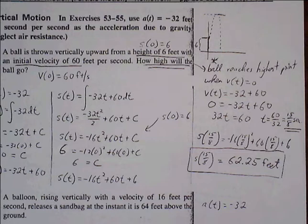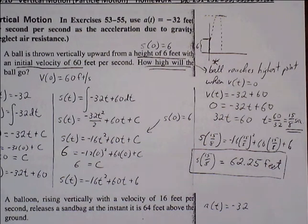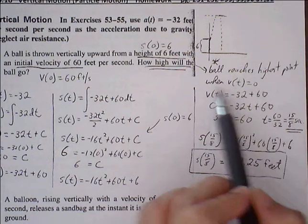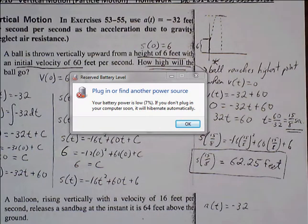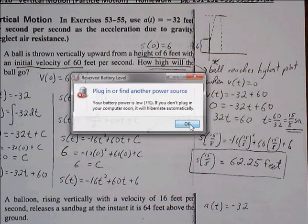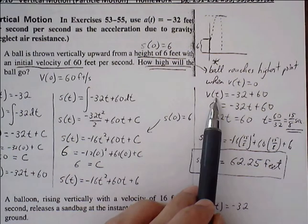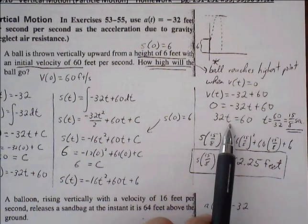Okay, so now it says how high will the ball go? Well, the ball is going to reach its highest point when velocity is 0. So let's go ahead and set the velocity equal to 0. When we set velocity equal to 0, we can solve for t, and t is equal to 60 over 32, or 15 over 8 seconds.